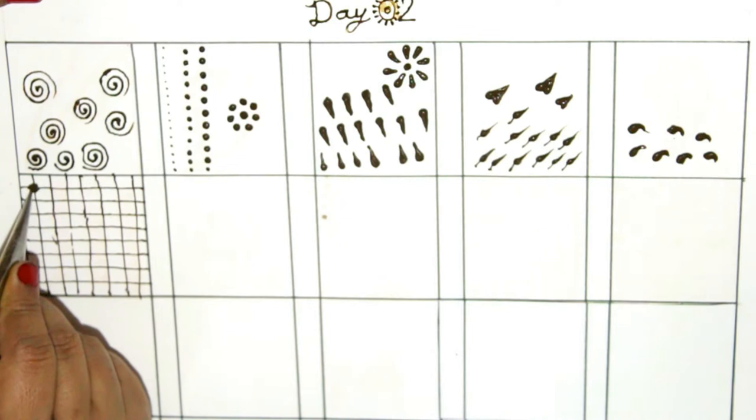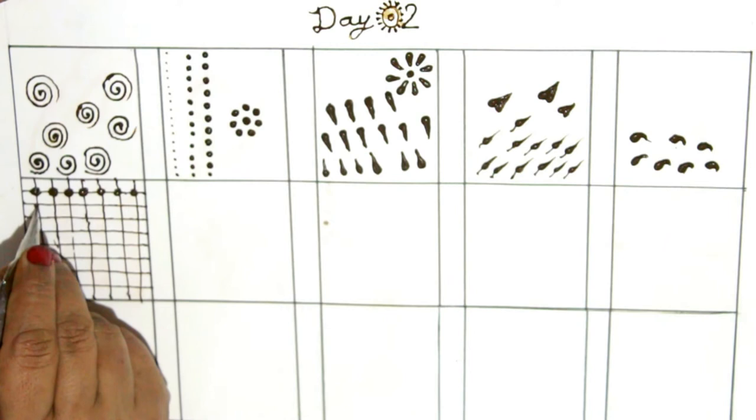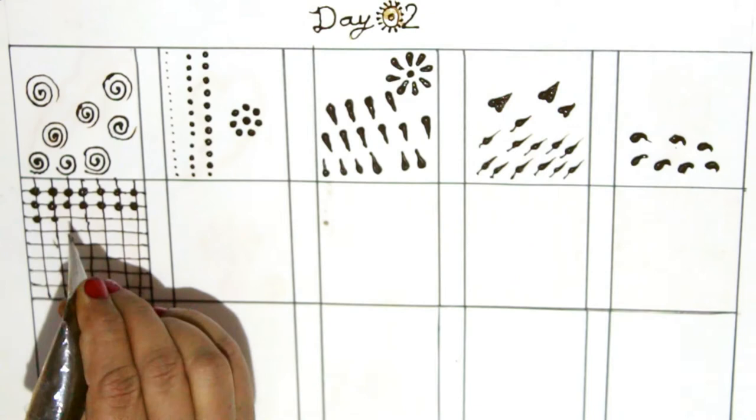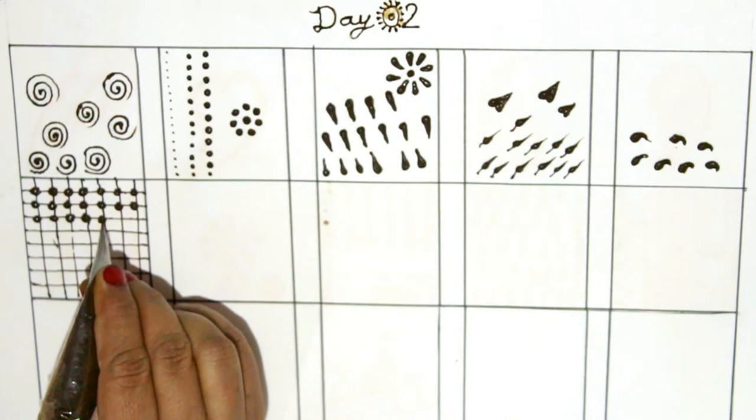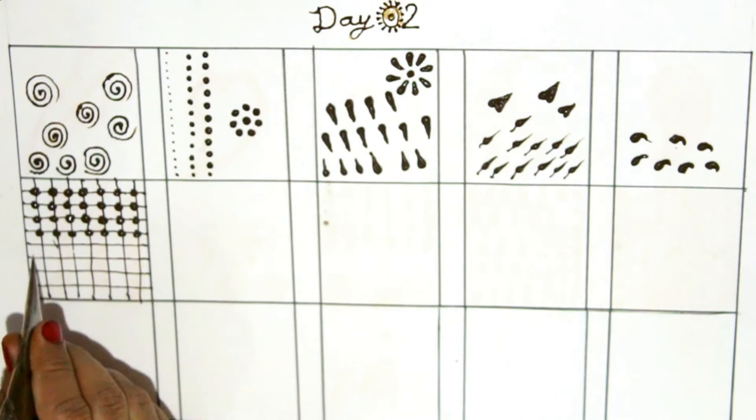And now we will have to use dots in these checks. Dots are the basic of mehndi design. It can be used anywhere in any design to make it beautiful and creative.